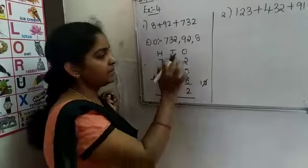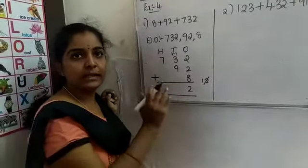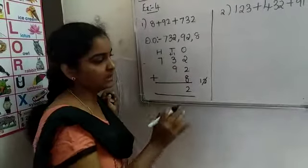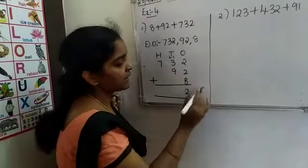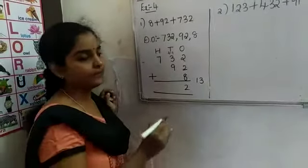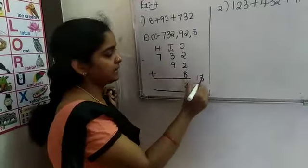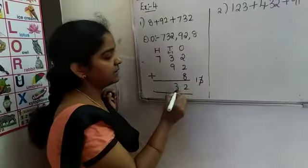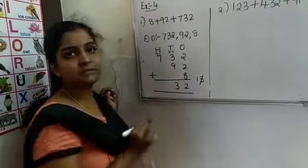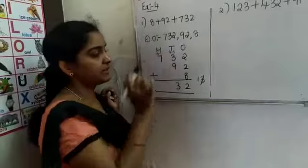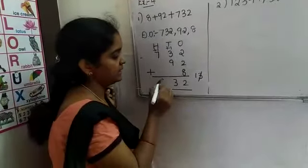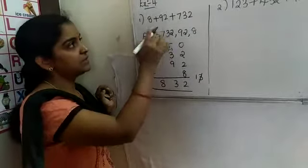Now 9 plus 1 carry over is 10, and 10 plus 3 is 13. So write 3 in the tens place and 1 carries over. Then 7 plus 1 is 8. So our answer is 832.